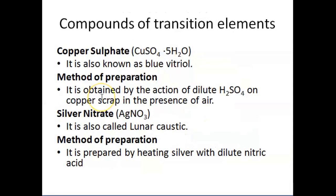Apart from the two compounds discussed, there are other compounds of transition elements. One is copper sulphate, also known as blue vitriol, which is obtained by the action of dilute sulphuric acid on copper scrap in the presence of air. Another compound is silver nitrate, also called lunar caustic, which is prepared by heating silver with dilute nitric acid.